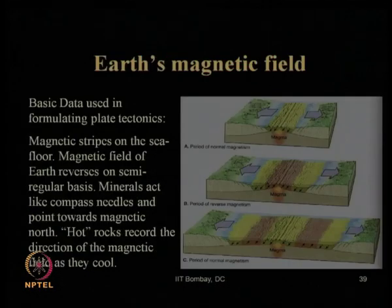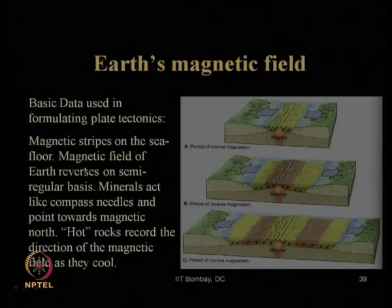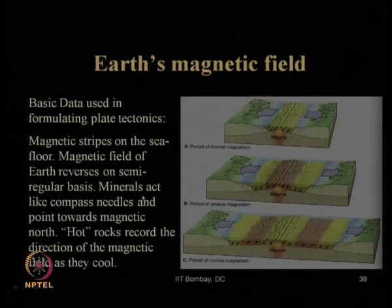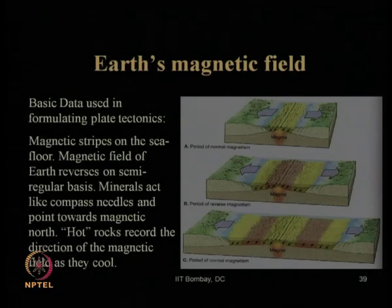Let us see the picture of the earth's magnetic field — the basic data used in formulating plate tectonics. It is believed that magnetic strips on the sea floor and the magnetic field on earth reverse on a semi-regular basis — once it is south pole, then north pole — and minerals act like compass needles, attracted to different poles of the magnetic field and pointing towards the magnetic north. Hot rocks record the direction of the magnetic field as they cool when coming closer to the ground surface.